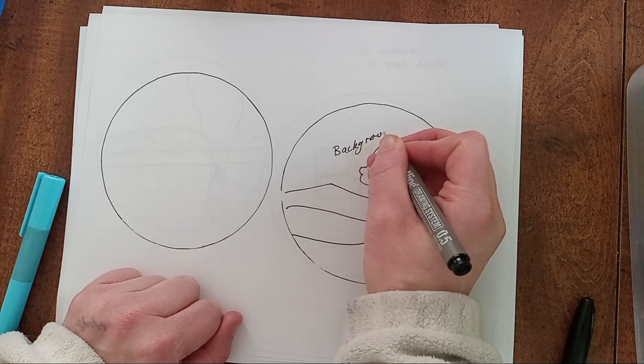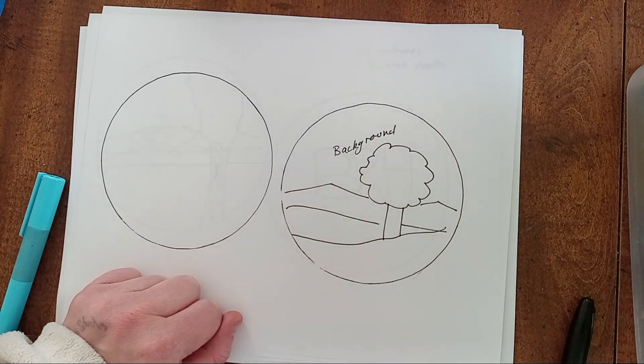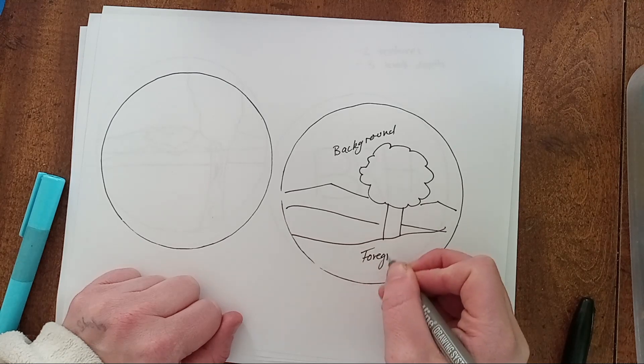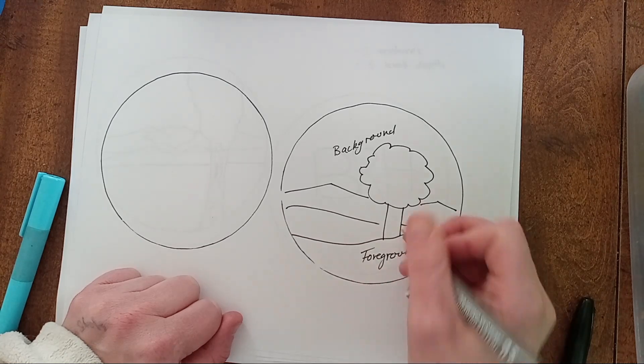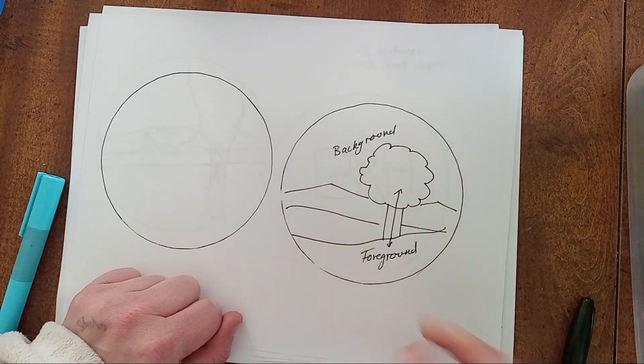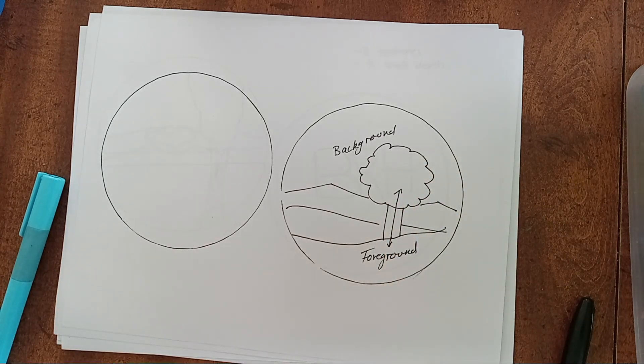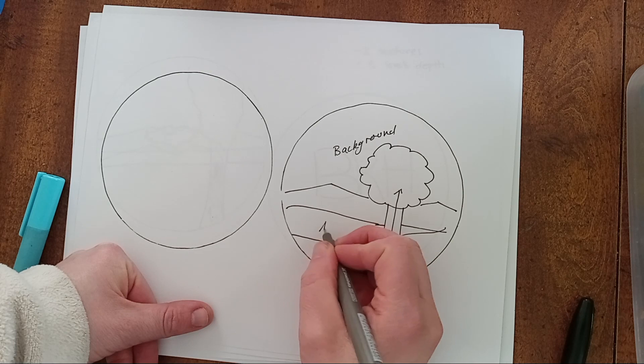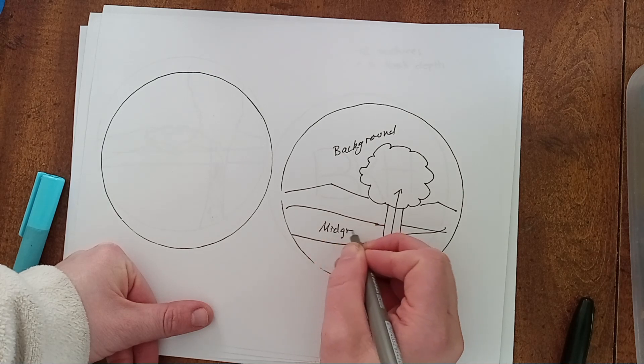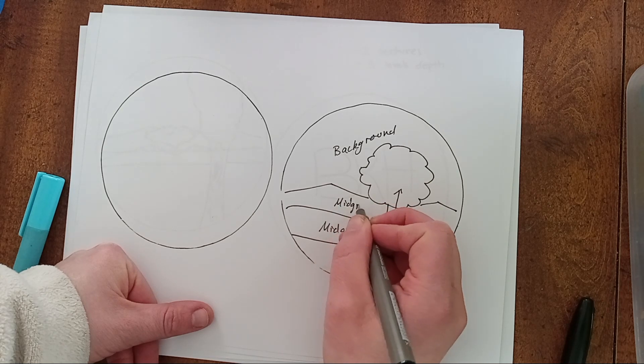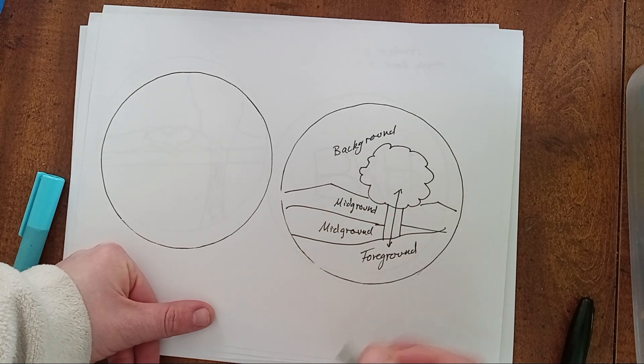And this right here will be my foreground, which includes the tree and this ground. So this is going to be the most forward towards me, the least carved away area. And then I have these two hills, so we have a mid-ground here and another mid-ground here. I'm requiring at least three levels of depth, but this one has four: one, two, three, four.